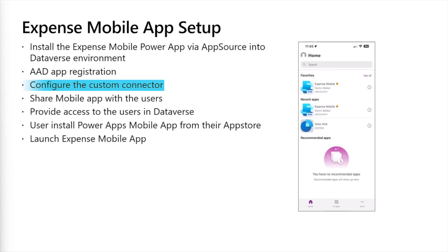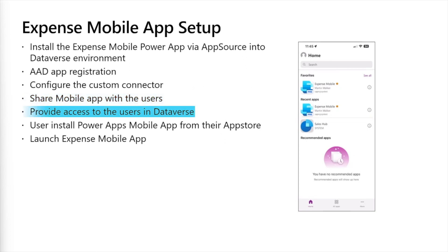The Expense Mobile App uses the Expense Core Service connector, a Power Apps custom connector, for all interactions with Dataverse. It requires app registration in Azure Active Directory and connector configuration using the details of the registered app. After the mobile app solution is installed in your Dataverse environment, you must share it with your users using the same process as sharing a Canvas app. Each relevant user must be assigned a basic user security role to create a connection to the custom connector. You can assign this role to a Dataverse group team so any member also has the role, or assign it directly to users.